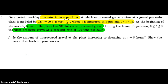For part c: is the amount of unprocessed gravel at the plant increasing or decreasing at t equals 5 hours? Show the work that leads to your answer. The amount of unprocessed gravel — what's the rate at which it's increasing or decreasing? This is going to be tons per hour, so we're going to read this off the graph itself at t equals 5 hours.